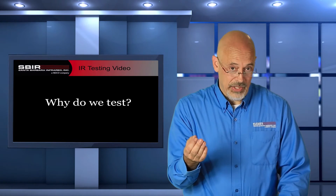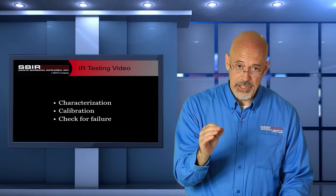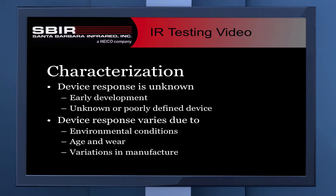Now, why do we test? There are several reasons for doing testing. Right off the bat, it's characterization of your camera, or you could be looking to calibrate the camera or check for failure. For characterization, generally this is early on in the development of a camera or when you're handed some sort of an imager that you know nothing about. You're trying to overall determine the operation — what this camera is capable of doing — as well as how to operate it or what the configuration of the camera is. When you're doing characterization, systems are poorly understood up front and you're trying to identify that.